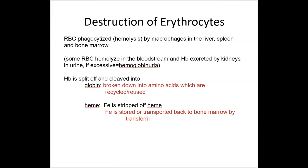Red blood cells live three to four months and then must be broken down — we can't just let them die in our blood vessels. When a red cell is lysed, it's called hemolysis, and it's phagocytized by macrophages in the spleen, liver, and red bone marrow — most of it in the spleen. Sometimes old, fragile cells hemolyze in the bloodstream itself, releasing hemoglobin that must be excreted by the kidneys in urine — called hemoglobinuria.